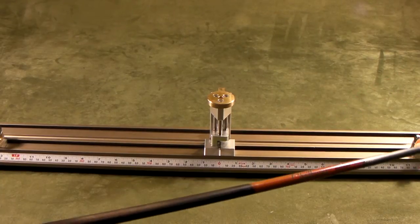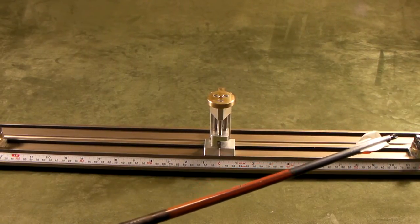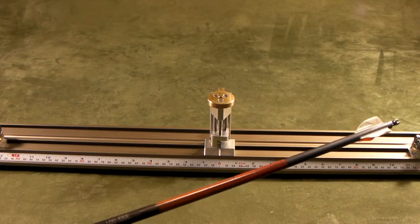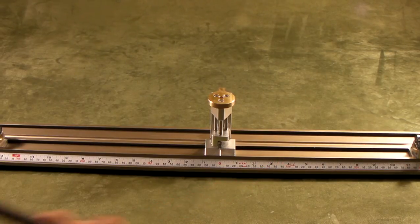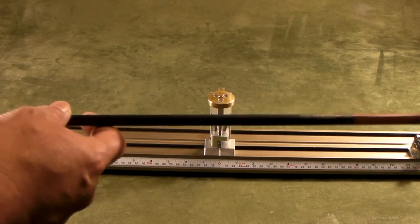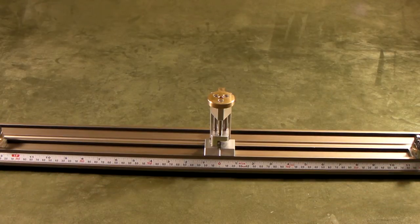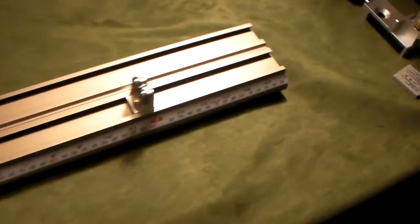What we have discovered, the best way to do it is: first of all, cut the shaft. Don't even bother to spine it. Cut the shaft first, put the insert in, and put the nock in. Then you measure the length of the arrow minus a quarter inch on both sides.